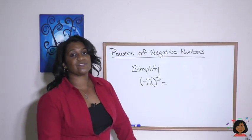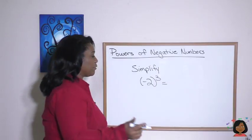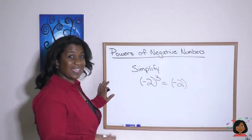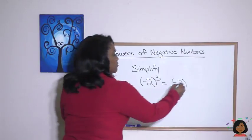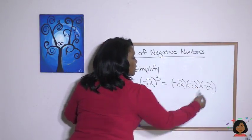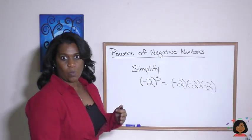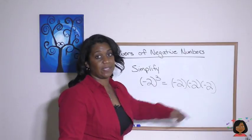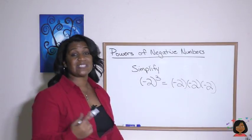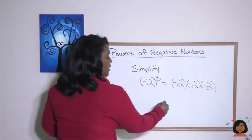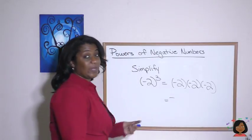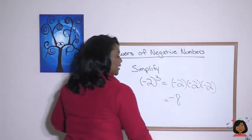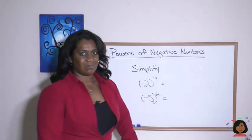How can we use the same thinking with exponents? Here we have negative 2 raised to the third power. An exponent means take negative 2 and multiply it times itself three times: negative 2 times negative 2 times negative 2. We count the negatives — one, two, three — that's an odd number, so our answer is going to be negative. Now just do the math: 2 times 2 is 4; 4 times 2 is 8. Negative 8 is our answer.